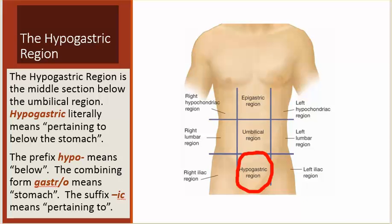The hypogastric region is the middle section below the umbilical region. Hypogastric literally means pertaining to below the stomach. The prefix hypo means below, the combining form gastro means stomach, and the suffix -ic means pertaining to.